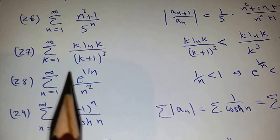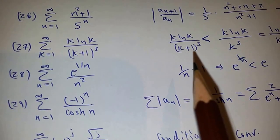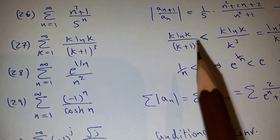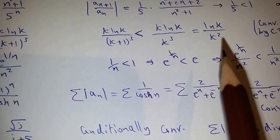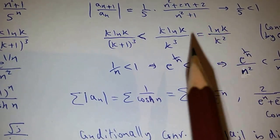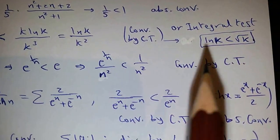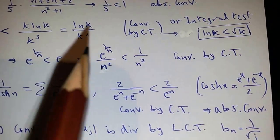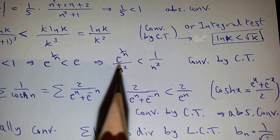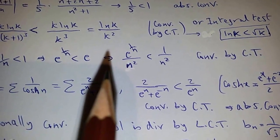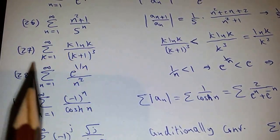For this series, if you start by comparing — take K+1: (K+1)³ is greater than K³, so you can write it as less than ln(K)/K². This is convergent by the integral test. Or you can use the fact that ln(K) is less than √K, so it's less than √K/K² = 1/K^(3/2), which is convergent by the p-series test with p = 3/2 > 1. So this is convergent by the comparison test.